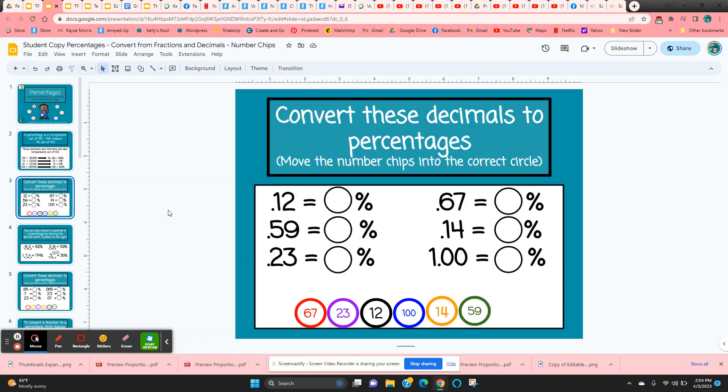So students are going to start on slide three, and they have these colorful number chips at the bottom. They're going to move them into the correct circles. So this slide is pretty simple. Just reinforces to the students, 12 hundredths is 12%, 59 hundredths, 59%, and so on. And one whole, 100%.